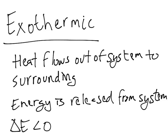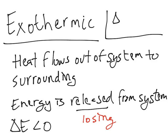Because if you release energy, in other words, you're losing energy. Delta E is just a difference in energy — final minus initial. So in an exothermic process, you will have more energy at the beginning than at the end, meaning that your difference in energy will be less than zero, or negative, because you lose energy.